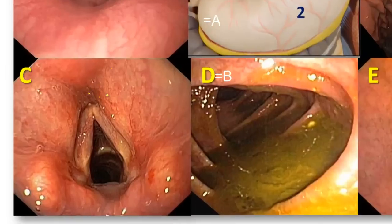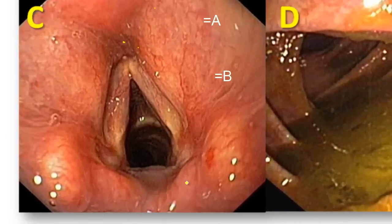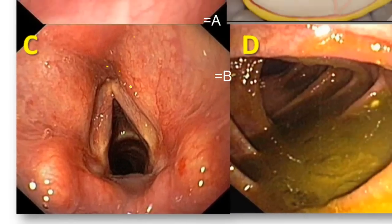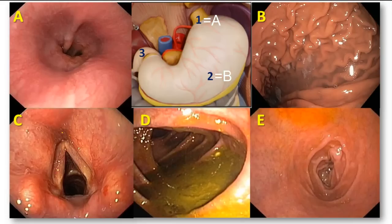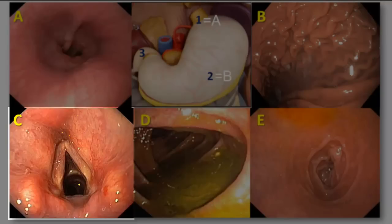Now let's look at C. This is a view of the inside of the larynx. These are the vocal folds. You can see through the opening between the vocal cords — the rima glottidis — you can see the trachea. So in fact, this is not an endoscope; it is a bronchoscope, and this shows the upper part of the larynx above the vocal folds. These are the arytenoid cartilages, and this is the root of the epiglottis. So it doesn't match with the first part of the duodenum.